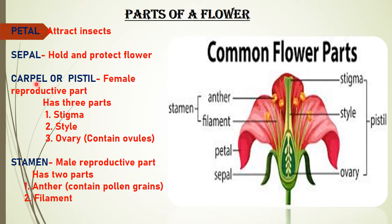Next is the carpel or pistil and stamen. They are the male and female parts of a flower involved in seed formation. The carpel is the female reproductive part and has three parts: stigma, style, and ovary. The stigma is the sticky part on which the pollen falls. The style is a long tube that connects the stigma to the ovary. The ovary contains ovules which turn into seeds.